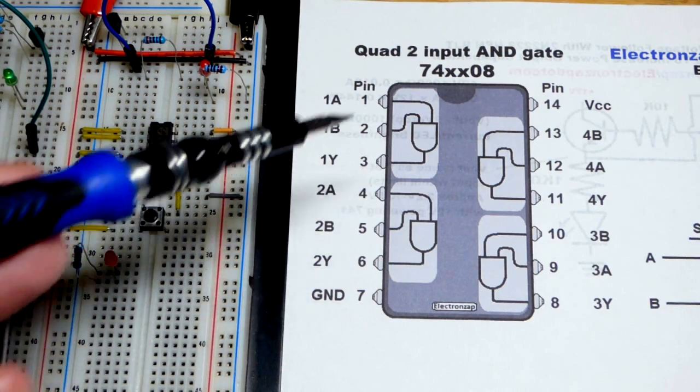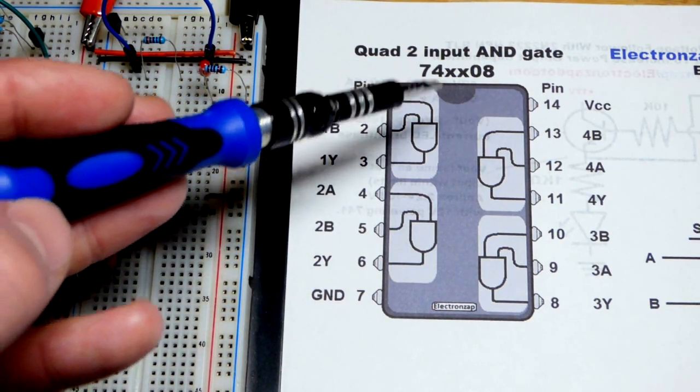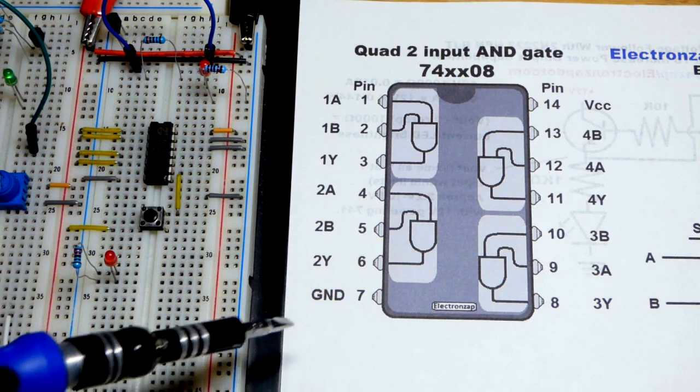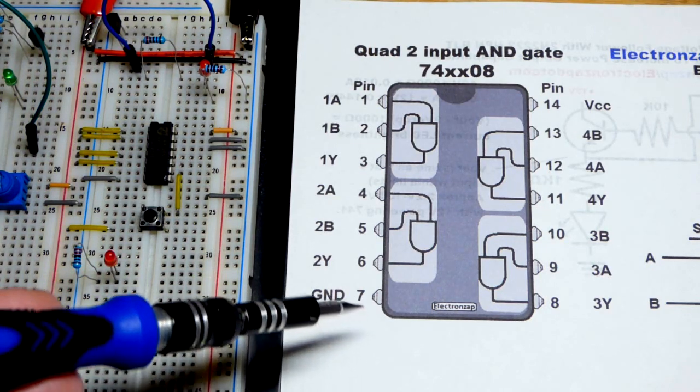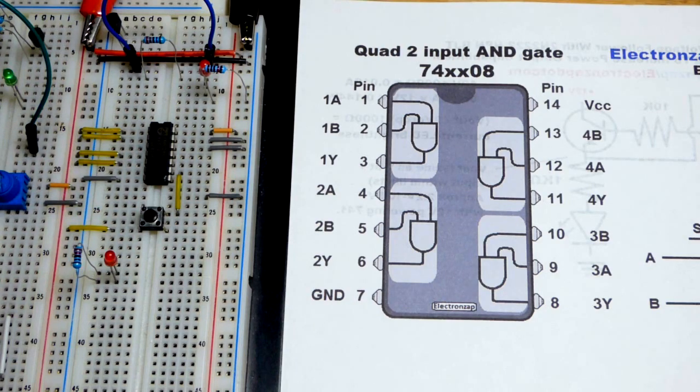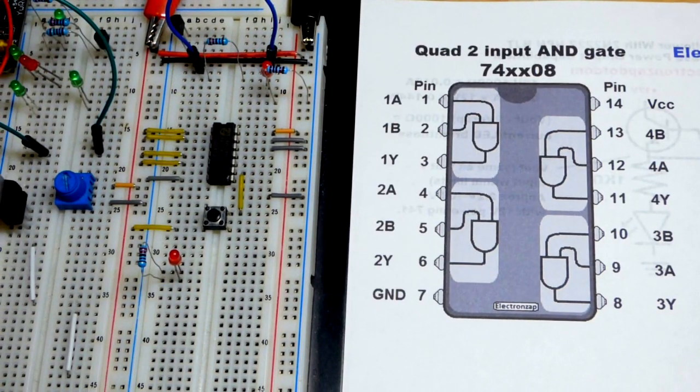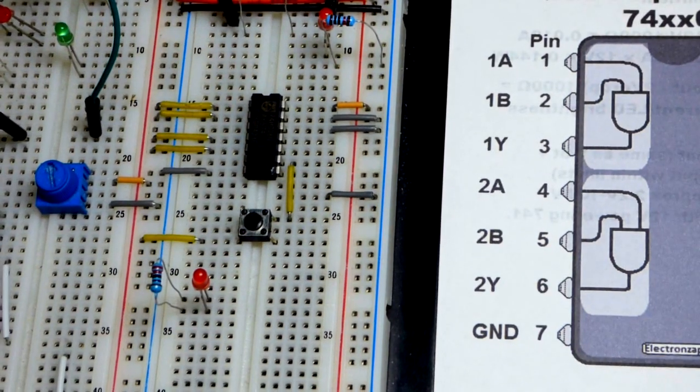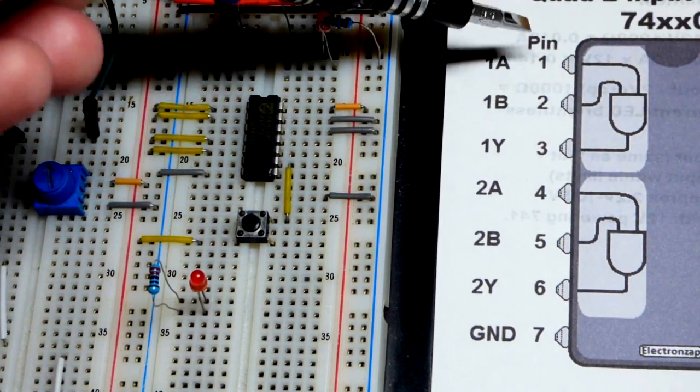You can see at top right, pin number 14 connected directly to the positive supply. We're using five volts, really you want five volts for any of these integrated circuits unless you look at the data sheet and see you can use a different voltage. So we have ground at pin 7, the bottom left pin there.